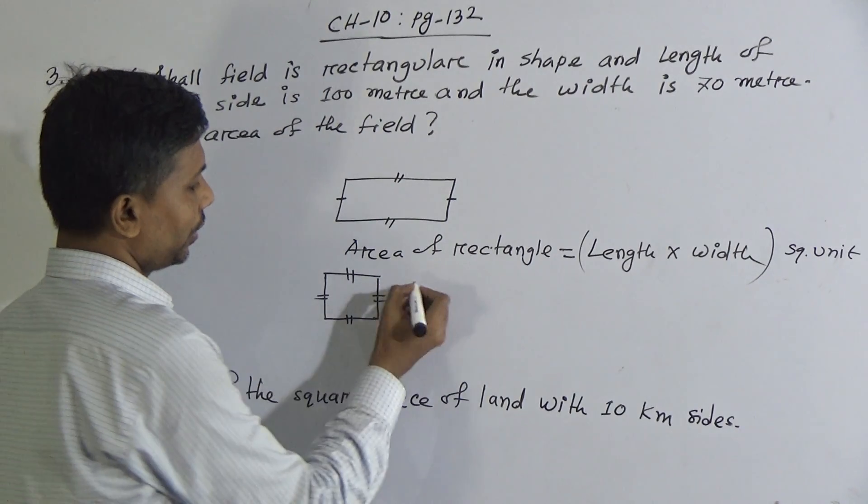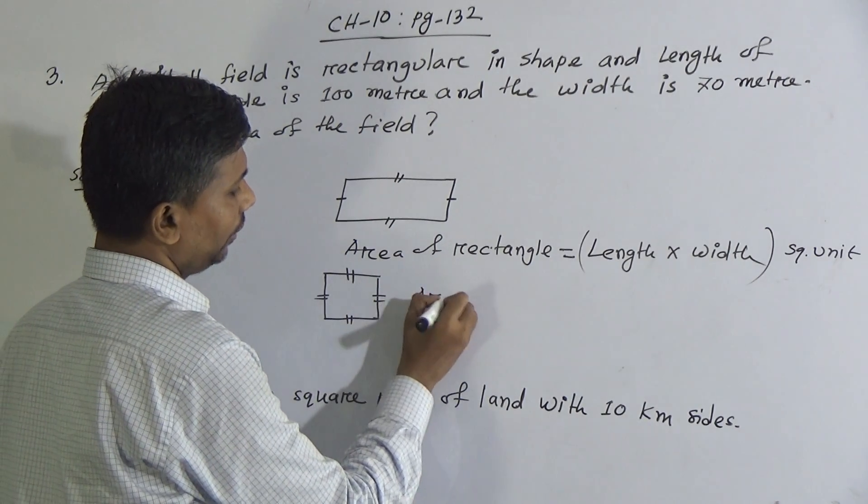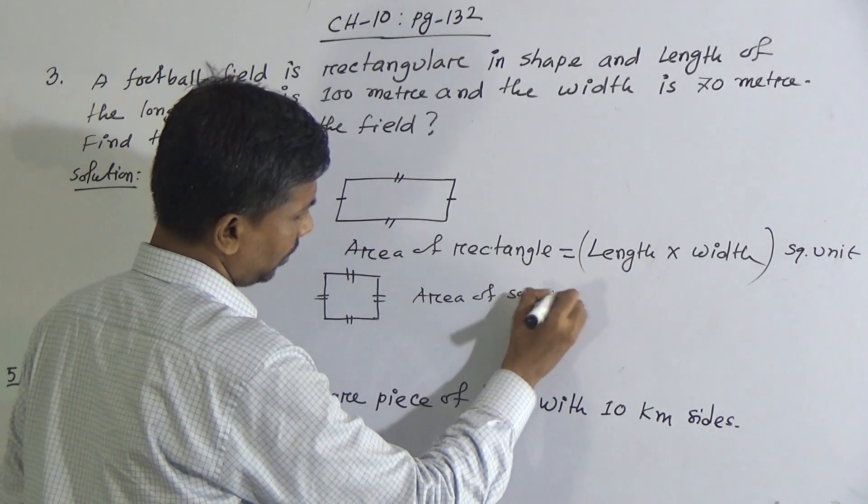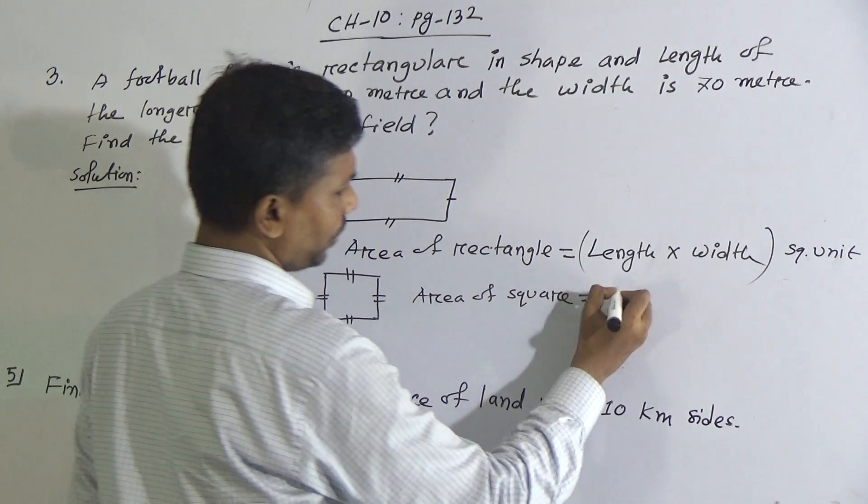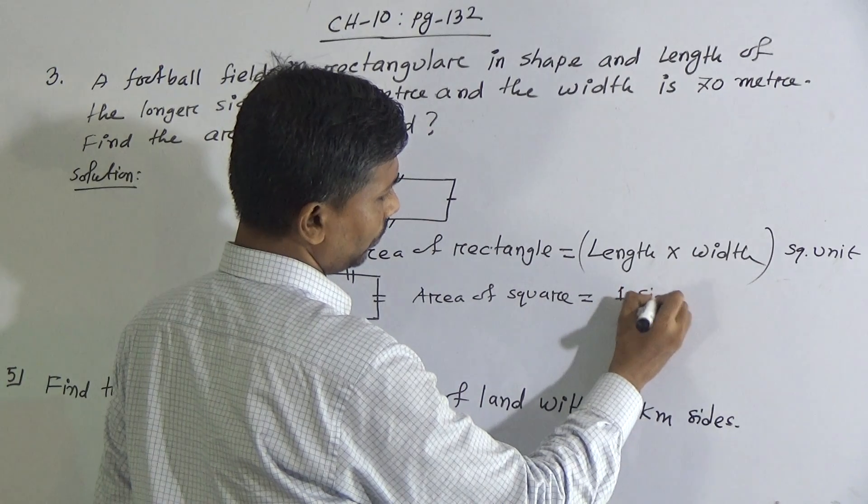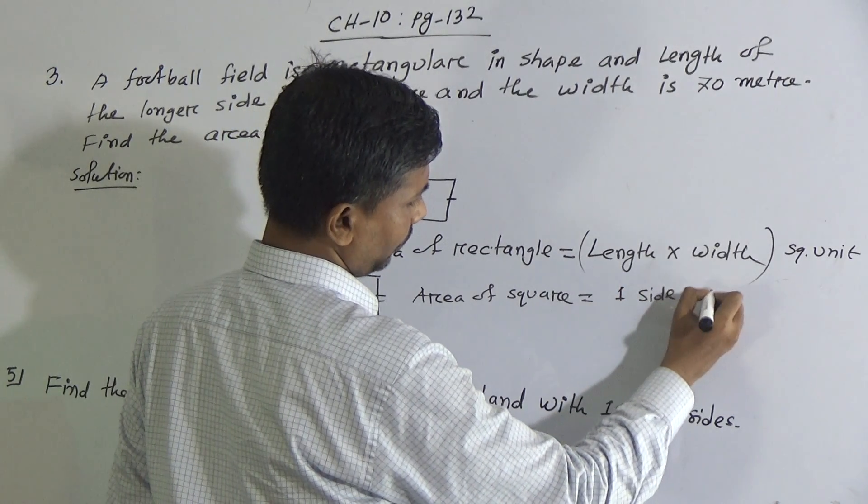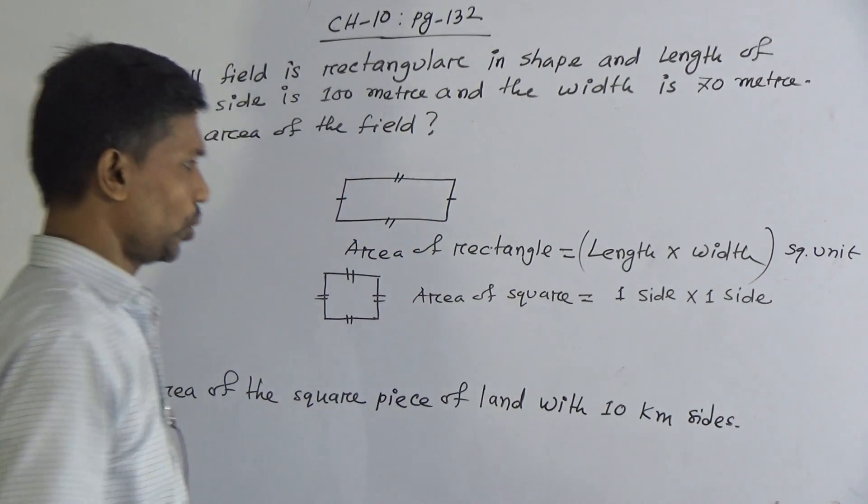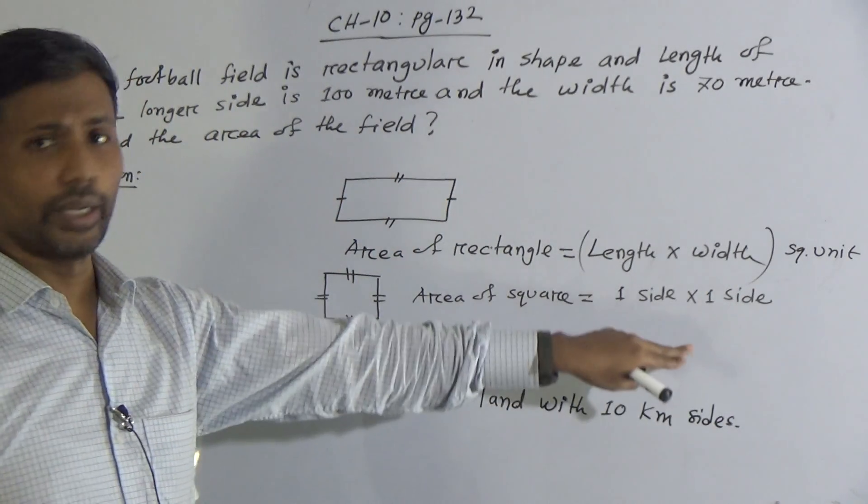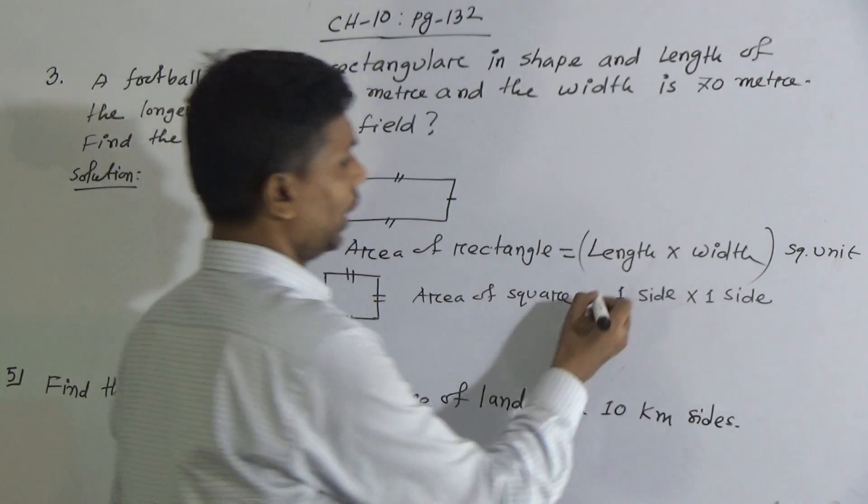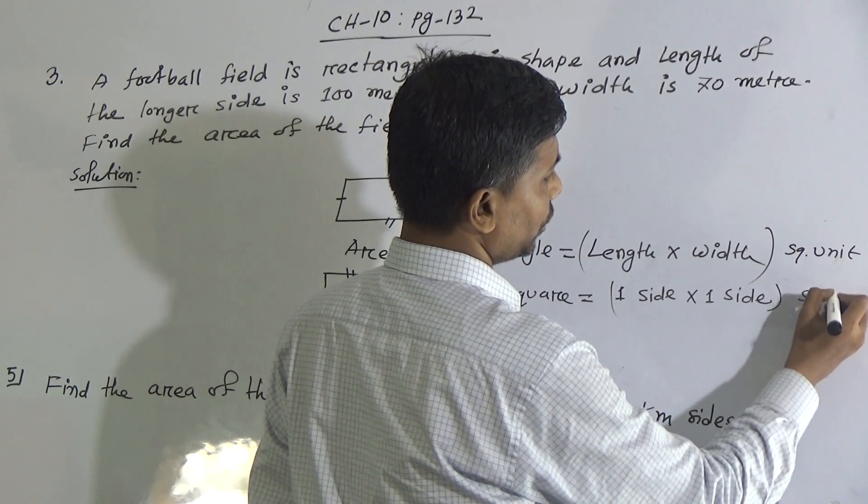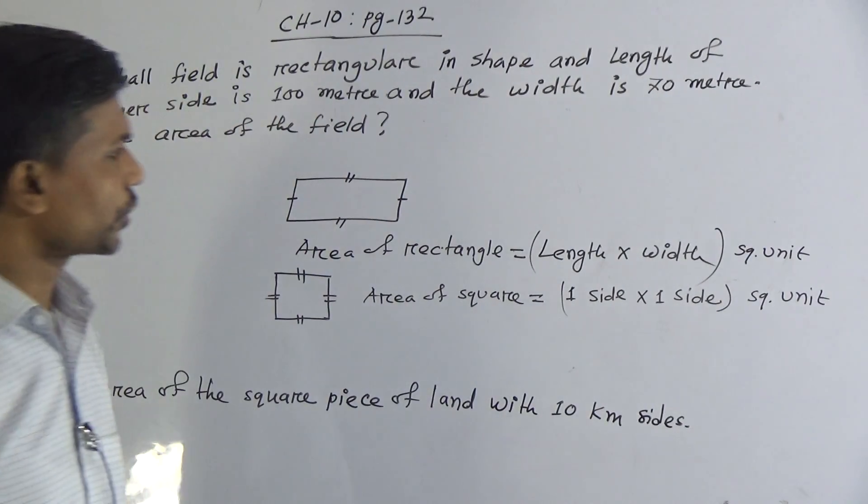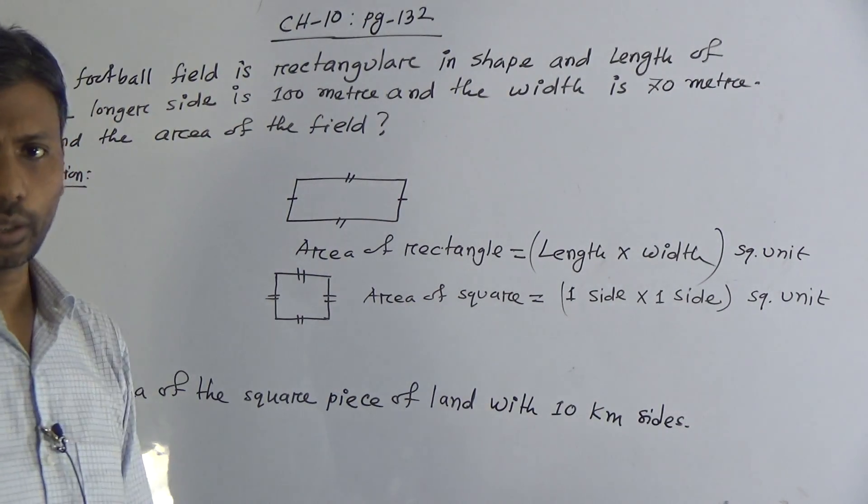Area of square is equal to one side into one side. Or, you can say, length into length, and write the square unit. It may be square centimeter, square kilometer.